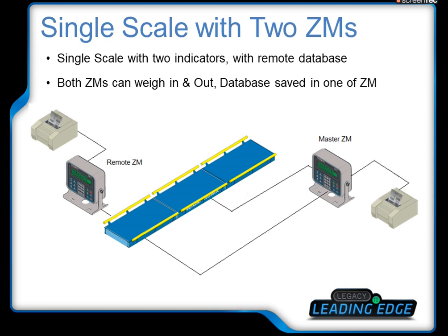The third type is a single scale with two indicators. Both indicators can weigh in and weigh out. The database is saved in one of the ZAM indicators — you can choose to save to the master indicator or to the remote indicator. Both indicators can also be used to print tickets.